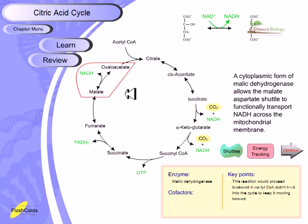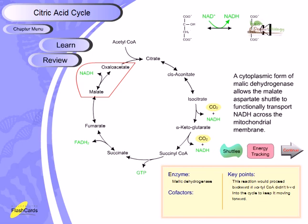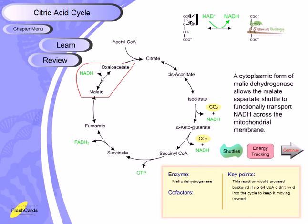In the final step, malate is converted into oxaloacetate. Oxaloacetate is the very first intermediate that combines with acetyl-CoA to produce citrate, which is the starting point of the citric acid cycle. In this reaction, NAD+ is reduced to NADH. The enzyme involved is malate dehydrogenase, which converts malate into oxaloacetate while producing NADH.